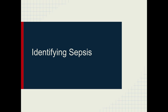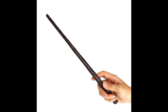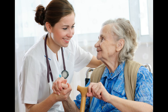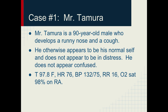So how do you tell if someone is septic? Unfortunately, there's no magic test we can do to determine whether someone is septic, so in the nursing home we'll be relying on your clinical assessments. Let's try some examples. Mr. Tamura is a 90-year-old male who develops a runny nose and cough. He otherwise appears to be his normal self and doesn't appear to be in any distress. He isn't confused. His temperature is 97.8 degrees Fahrenheit, heart rate 76, blood pressure 132 over 75, respiration rate 16.